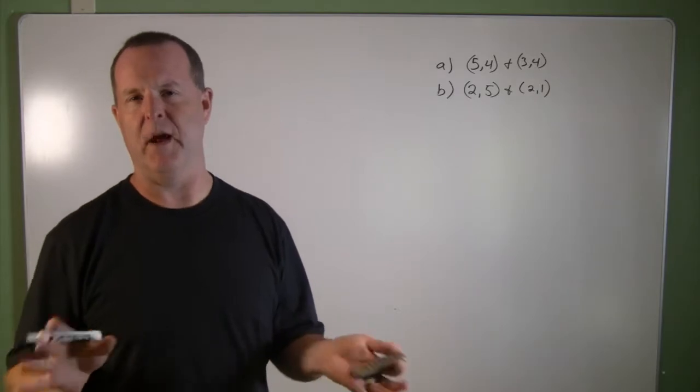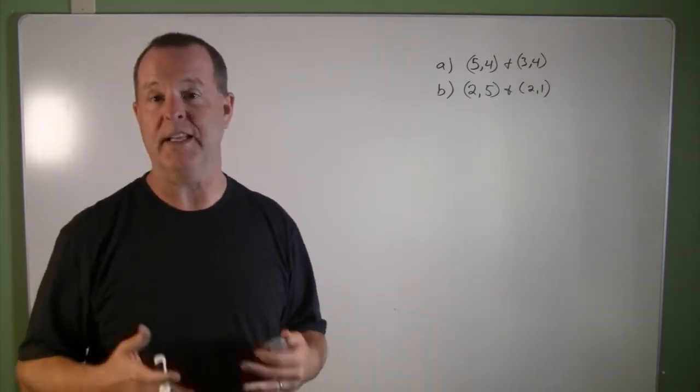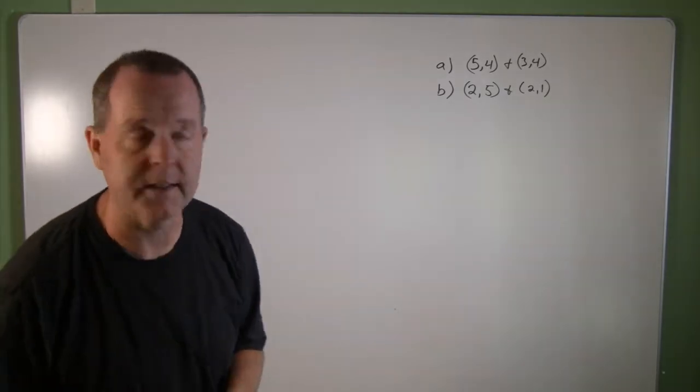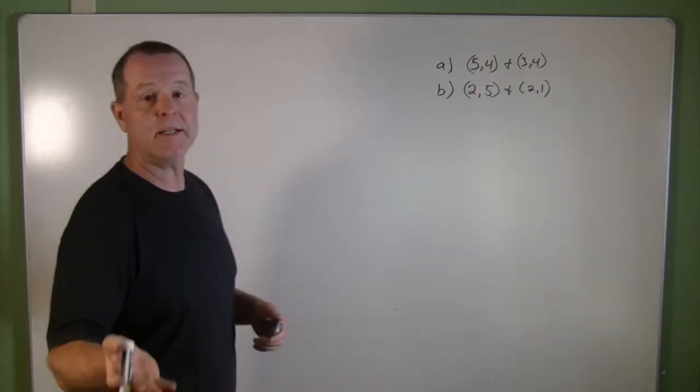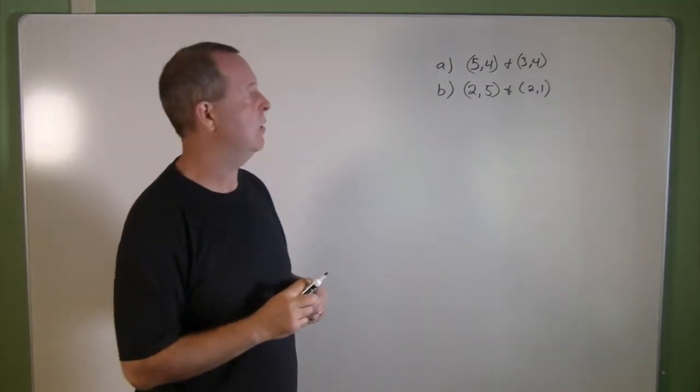In this example, we want to show you something else that will pop up once in a while and give you the confidence of how to deal with it when you see that. So I have two examples here. We want to find the slope between these two lines.